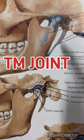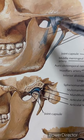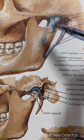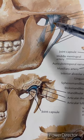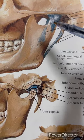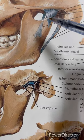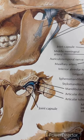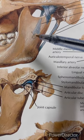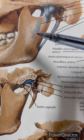Today our topic of discussion is the temporomandibular joint. The temporomandibular joint is a biarthrodial hinge joint that facilitates the complex movements necessary for eating, swallowing, speaking, and yawning. It is located anteriorly to the ear on the lateral aspect of the face. The temporomandibular joints are two joints connecting the jaw bone to the skull.